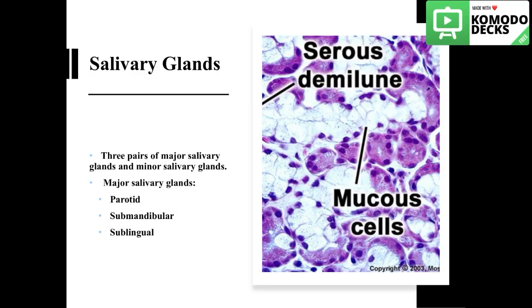Finally, we will be talking about the salivary glands. There are three pairs of major salivary glands and 600 to 1000 minor salivary glands in the oral cavity. The major salivary glands are the parotid gland, the submandibular gland, and the sublingual gland.